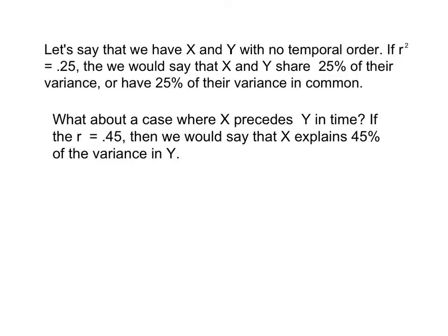To wrap this up, let's take two examples. First, we have an X and Y variable with no temporal relationship between each other. No temporal order, doesn't matter if X comes first or Y comes second, or vice versa. If the r-squared is equal to 0.25, then we would say that X and Y share 25% of the variance, or have 25% of the variance in common.